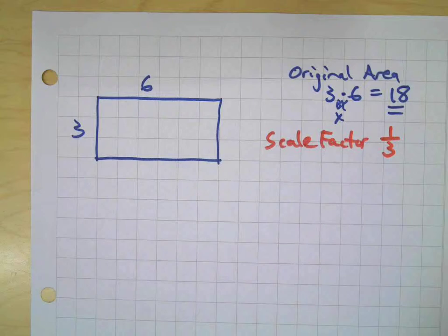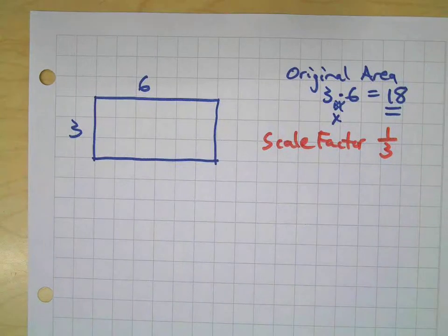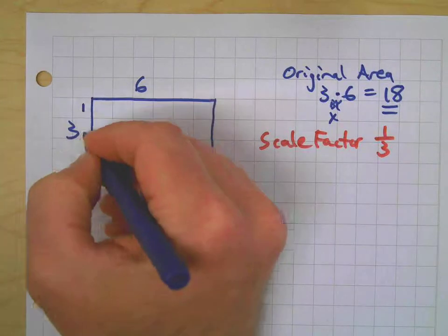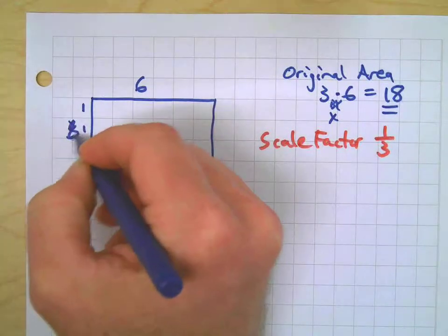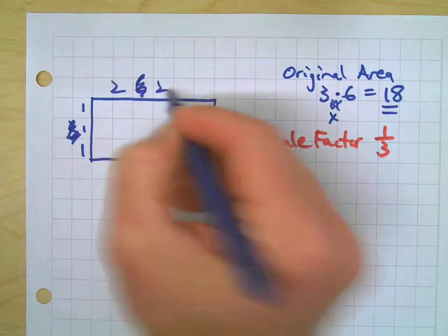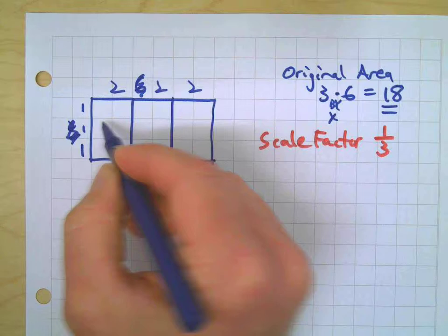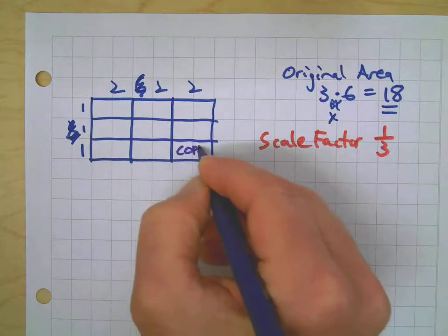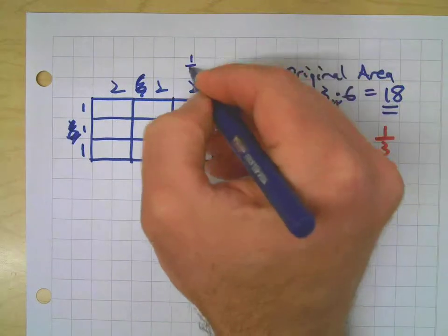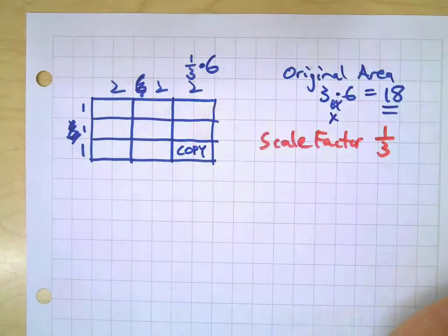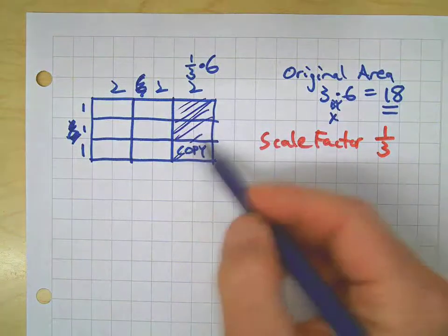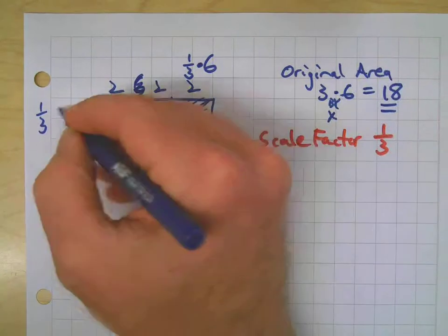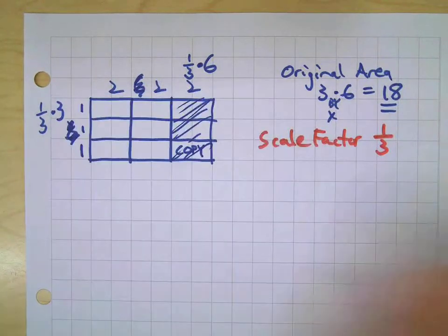We're going to use a scale factor of one-third. Remember, this video is focusing only on reductions, so my copy is going to be much smaller than my original. If I take my original dimensions and cut them into three pieces — two, two, and two — and similarly for the other dimension.